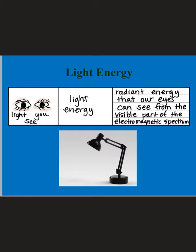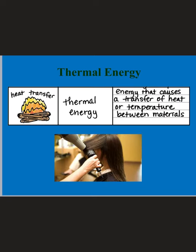Light energy is the energy that your eyes can see. There are all kinds of light in the spectrum — some of it we can't see — but all the light that we can see with our eyes is considered light energy. A lamp and the sun are examples.